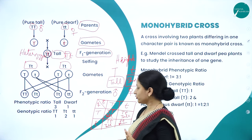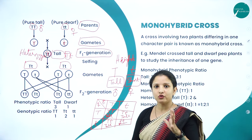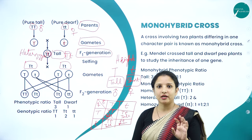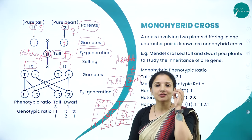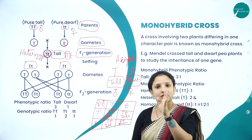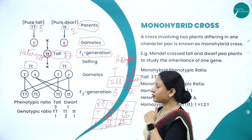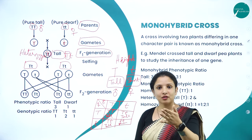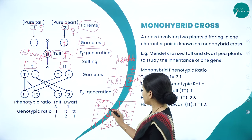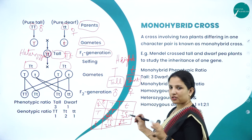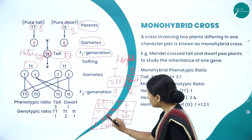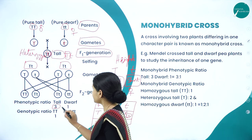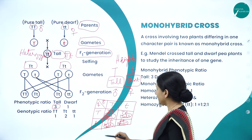Now let's talk about phenotypic and genotypic ratios. Phenotypic ratio refers to the morphological character — what you can observe by looking at a plant. When he sowed the pea plants in the garden, he could see which were tall and which were short. By looking, how many tall plants did he get? Three. How many dwarf? One. So the phenotypic ratio is 3 tall : 1 dwarf.